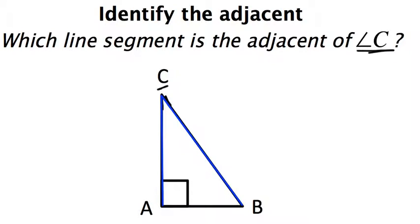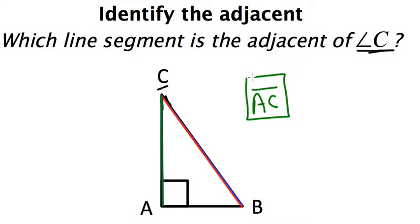However, this one — which I'll put in red — is the hypotenuse, which therefore leaves this one, which I'll put in green, as what we call the adjacent of angle C. So the answer is: line segment AC is adjacent to angle C.